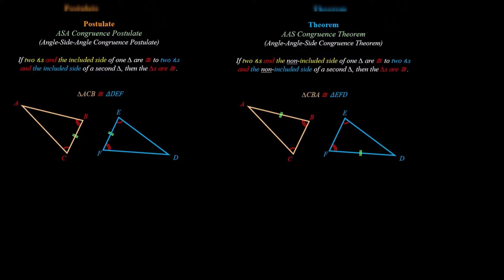Again, be very careful how you write the congruence statement — start at the proper corresponding angle of each triangle and go in the right direction. So if we have C, B, A in one triangle, and the corresponding angle to C is E, we go towards F and D. Triangle CBA is congruent to triangle EFD. These are the four ways we prove triangles to be congruent, other than the definition.